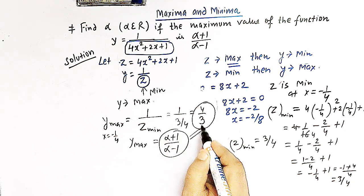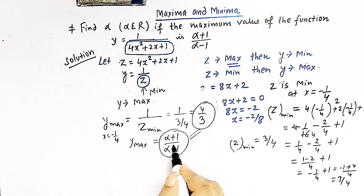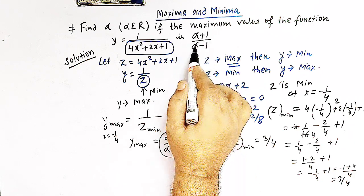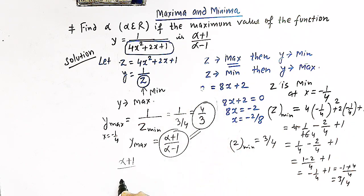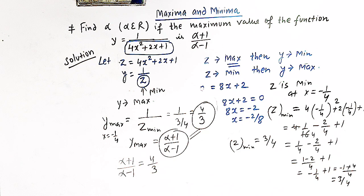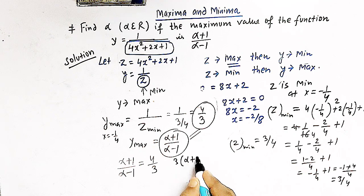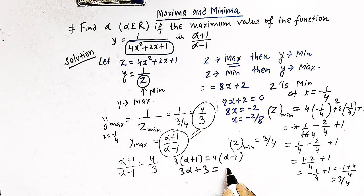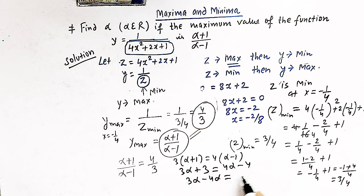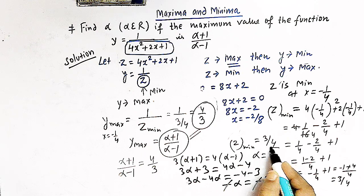Since y_max = 4/3 and y_max is given as (alpha + 1)/(alpha - 1), we equate these two quantities to frame a linear equation in alpha. Cross-multiplying: 3(alpha + 1) = 4(alpha - 1), so 3alpha + 3 = 4alpha - 4. Taking 4alpha to the left and 3 to the right: -alpha = -7, so alpha = 7.